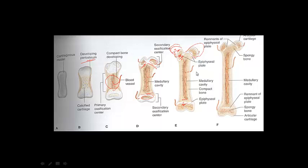At different stages — and it does happen earlier for females — those growth plates will close. In females, growth spurts occur earlier in life due to hormones. Girls in 6th and 7th grade are usually taller than boys because they've started their major growth spurt. About two years after a girl starts her period, the growth plates close. Estrogen initially stimulates growth but then causes the growth plates to close.